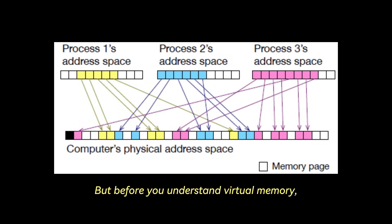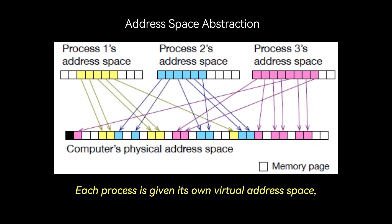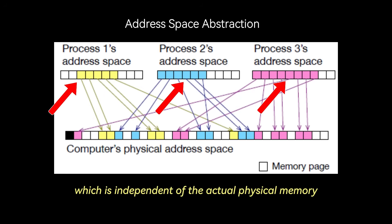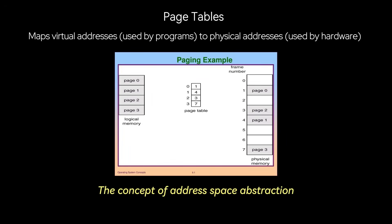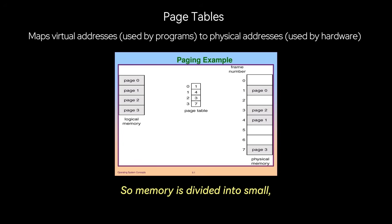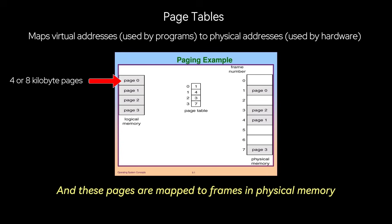But before you understand virtual memory, you first have to understand address space abstraction. Each process is given its own virtual address space, which is independent of the actual physical memory. The OS mapping these virtual addresses to physical addresses is done using page tables. This concept segues perfectly into paging: memory is divided into small fixed-sized pages, typically four kilobytes or eight kilobytes, and these pages are mapped to frames in physical memory.